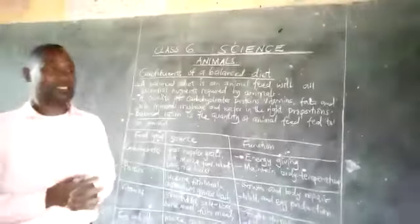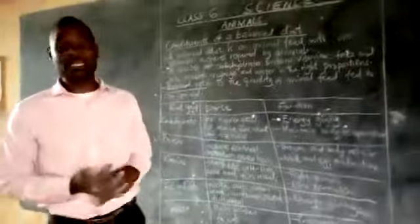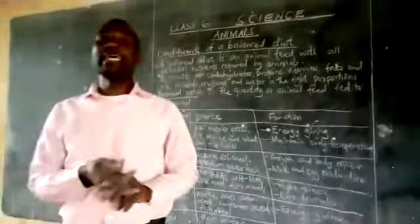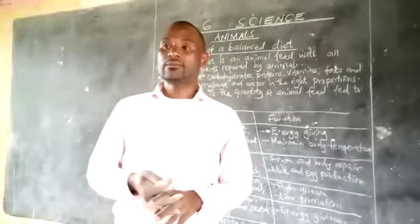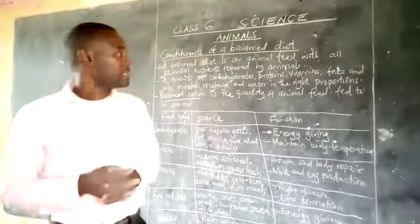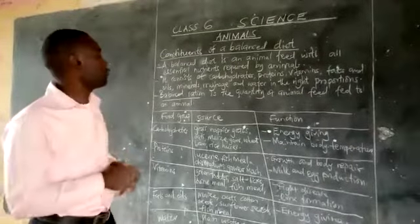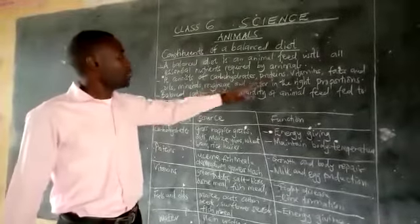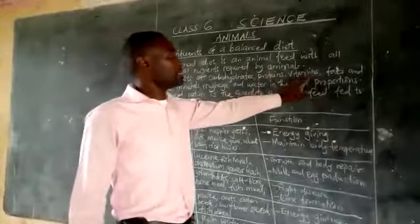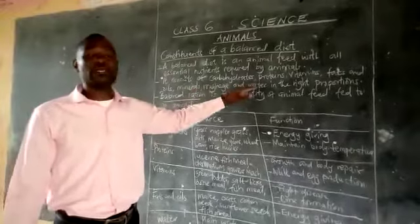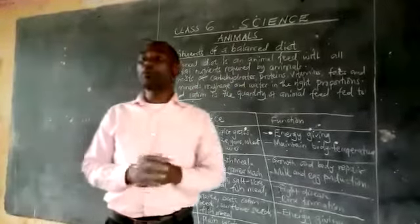A balanced diet is an animal feed that has all the nutrients required by the animal. Now this balanced diet consists of carbohydrates, proteins, vitamins, fats and oils, minerals, roughage and water in the right proportions.